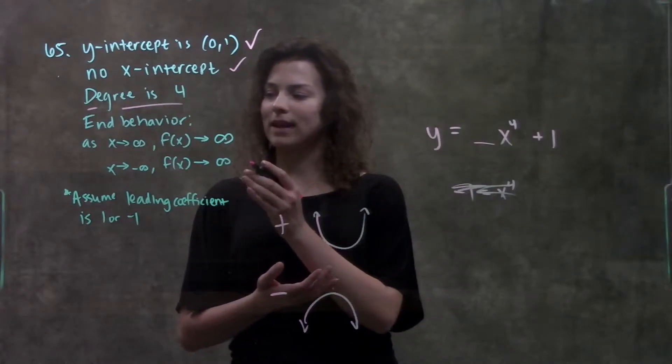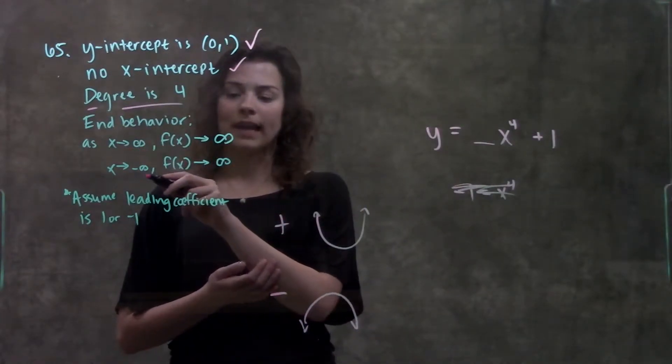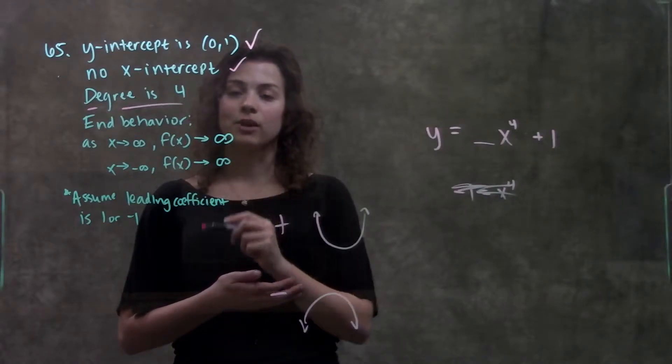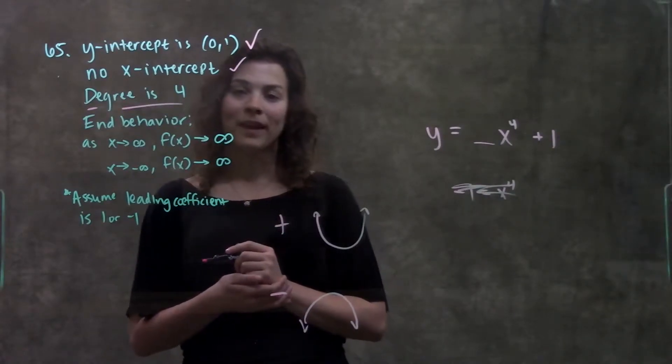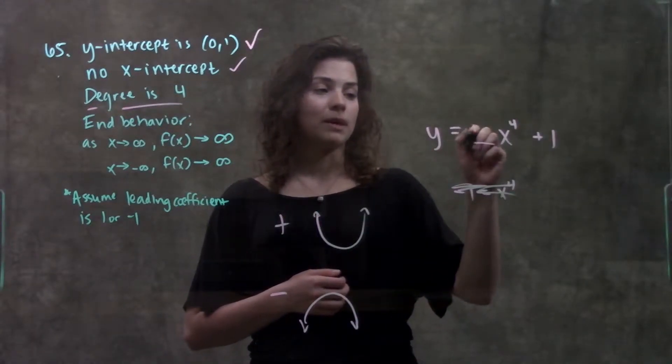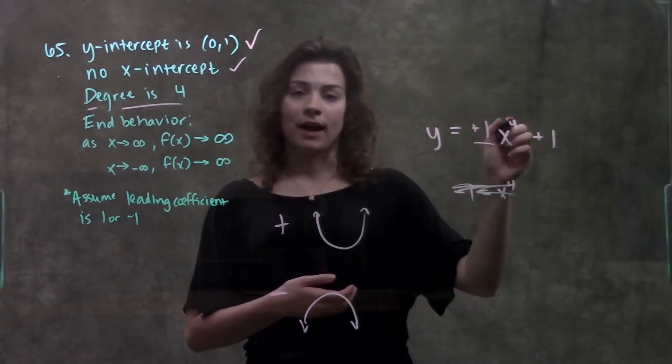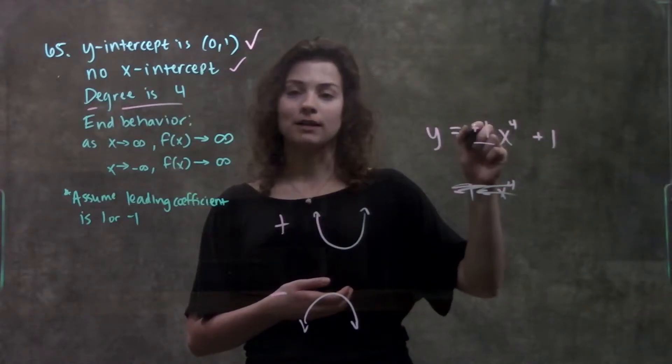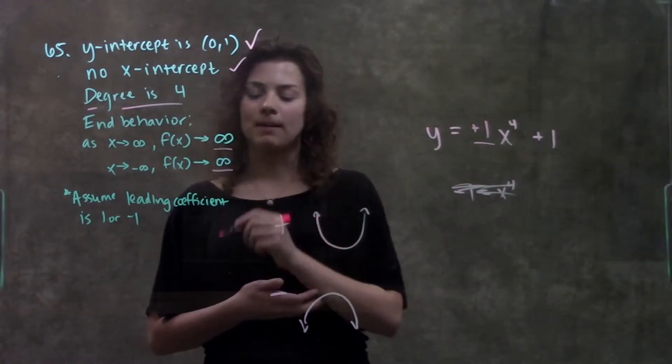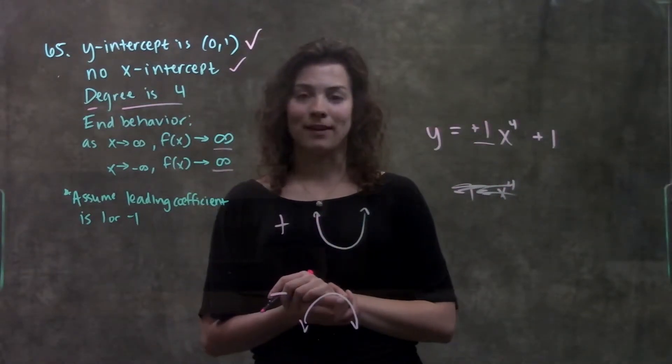Alright, so looking at what they gave us, they told us that as x approaches both positive and negative infinity, our end behavior is going towards positive infinity. So, that means that my coefficient here must be a positive 1. Since I'm multiplying my positive x to the 4th values times a positive 1, that will give me my positive infinity end behavior values that they told us.